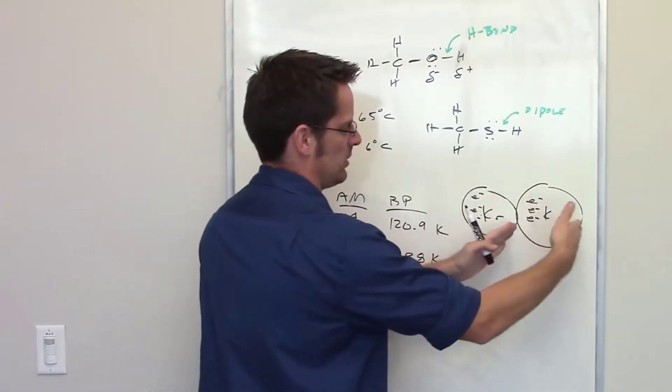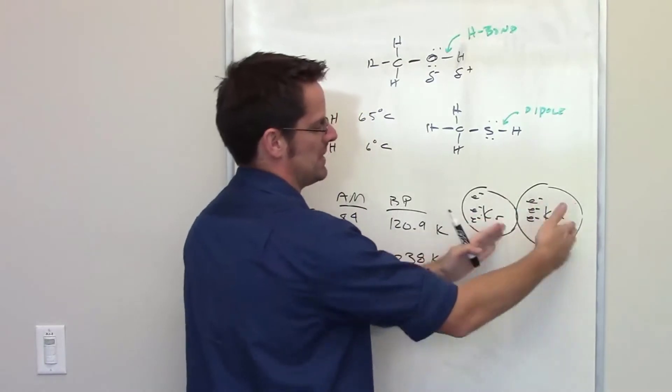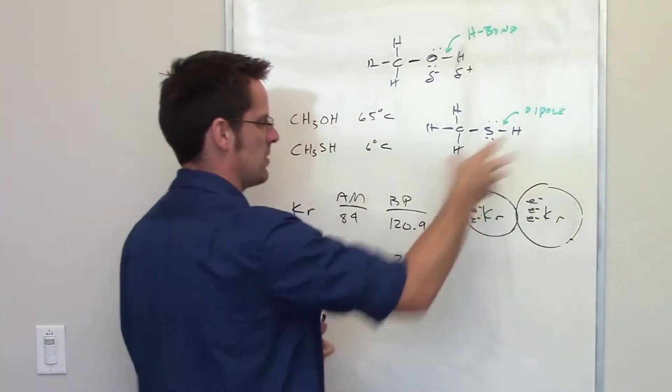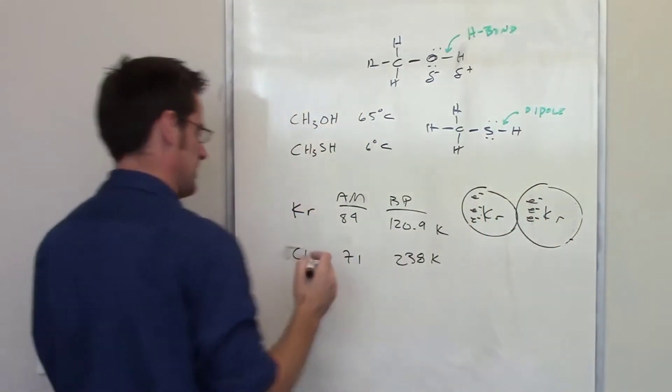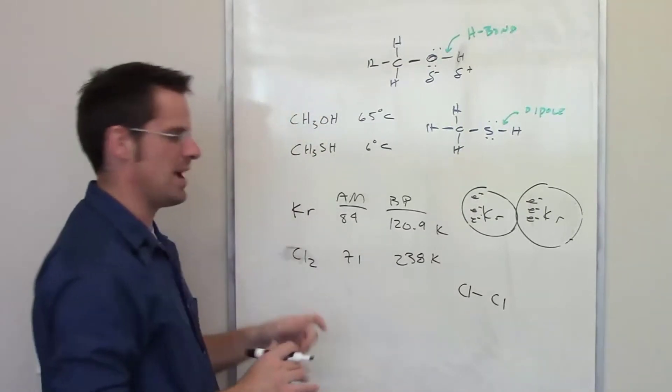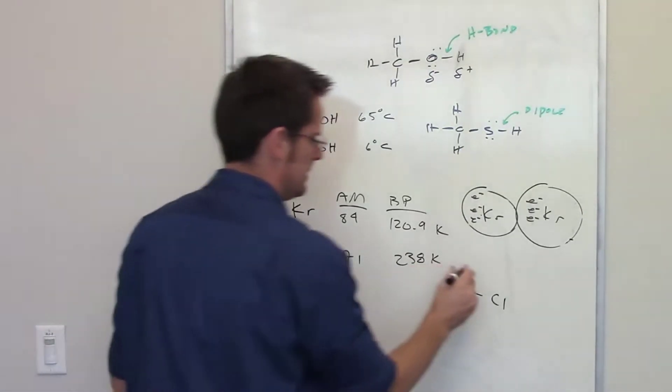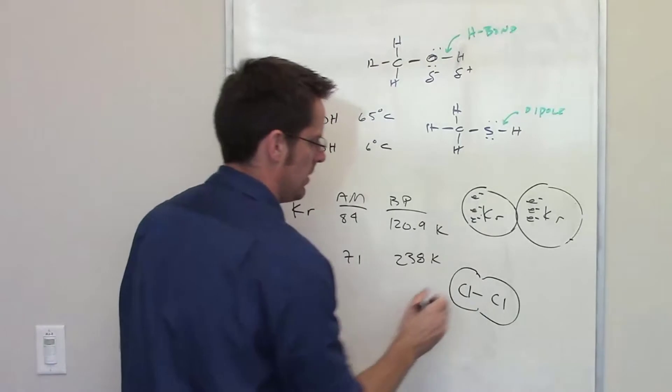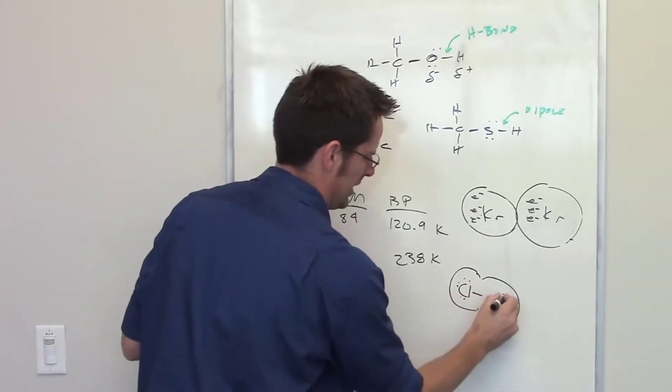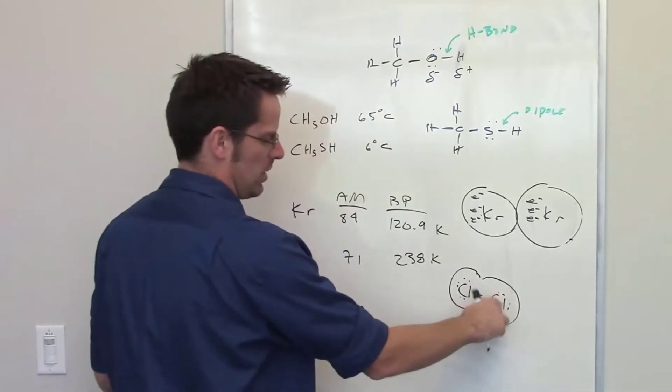And that will continue to happen as other krypton stack on top of each other. In the case of chlorine gas, Cl₂, I have two atoms of chlorine in a single molecule. Therefore, I'll go ahead and draw the full Lewis structure here, but these electrons really around these chlorines are oscillating around the entire molecule and its molecular orbital.